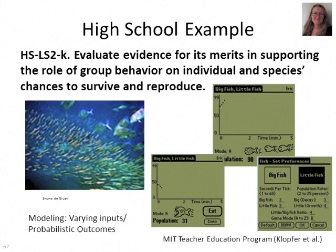At the high school level, you introduce the idea of modeling by varying inputs, along with the concept of probabilistic outcomes. It's not a cause and effect with a deterministic relationship — instead, group behavior impacts individuals and species. At the species level, we can say something is causal even if it didn't impact every individual fish.